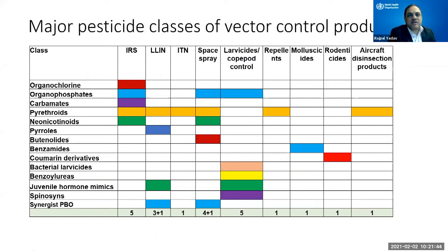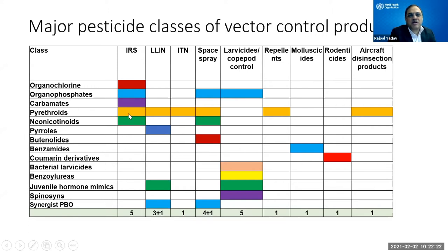This slide summarizes major pesticide classes for vector control. Organochlorines include only DDT for IRS, restricted to a few countries with India as the largest producer. Organophosphates are used for IRS, space spraying, and larviciding. Pyrethroids are the most widely used class — in IRS, LLINs, ITN conventional treatment, space spraying, repellents, and aircraft disinsection.